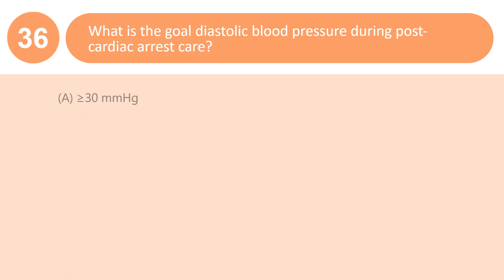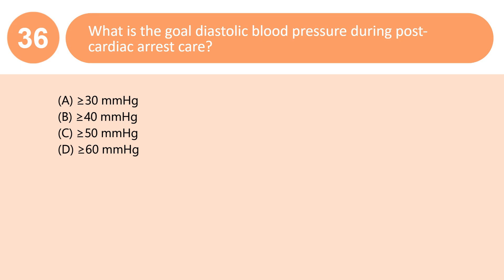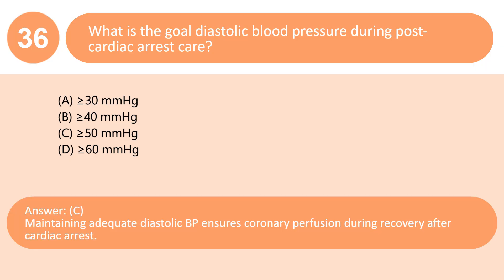What is the goal diastolic blood pressure during post-cardiac arrest care? A. ≥30 mmHg. B. ≥40 mmHg. C. ≥50 mmHg. D. ≥60 mmHg. Answer: C. Maintaining adequate diastolic BP ensures coronary perfusion during recovery after cardiac arrest.